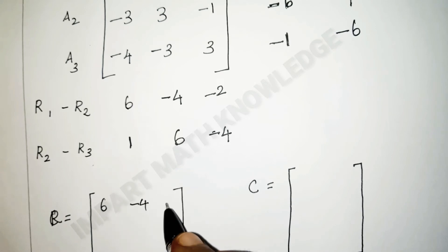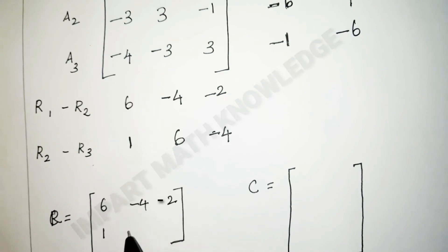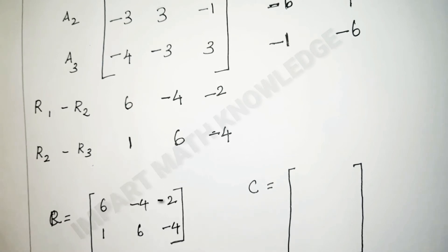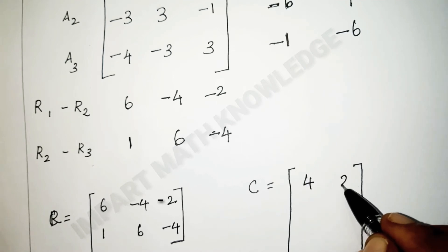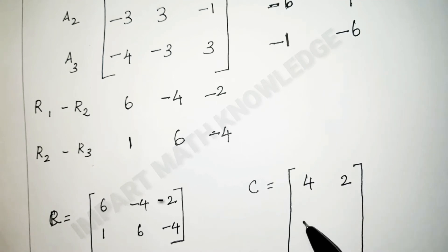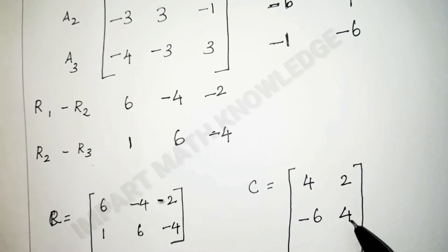Continuing the row matrix values: −4, −4, −4, and −1 minus 5 = −6.